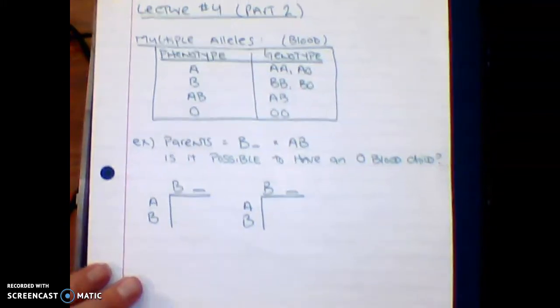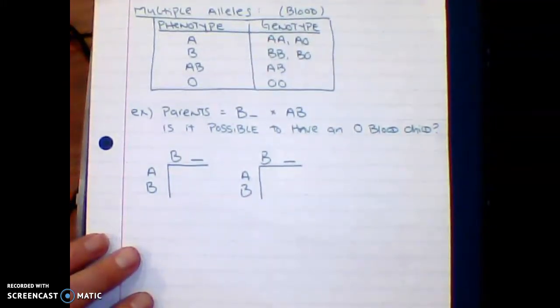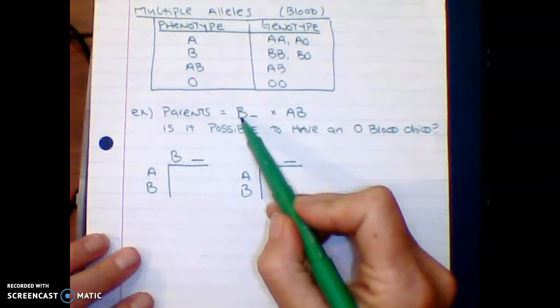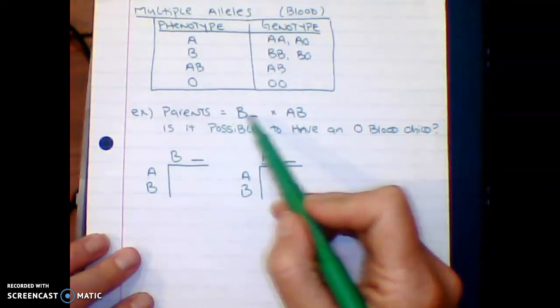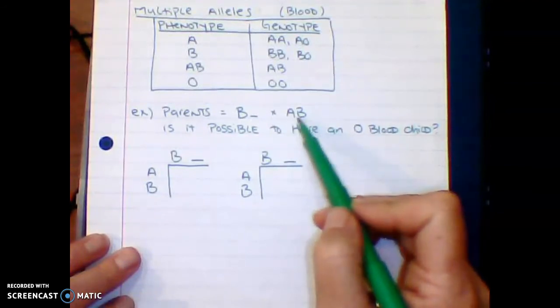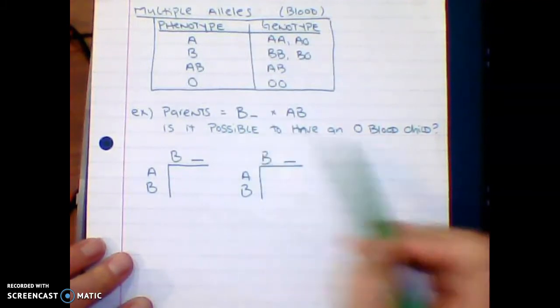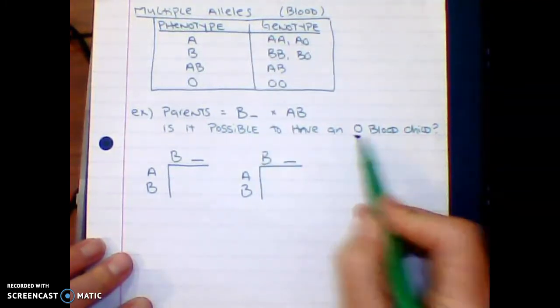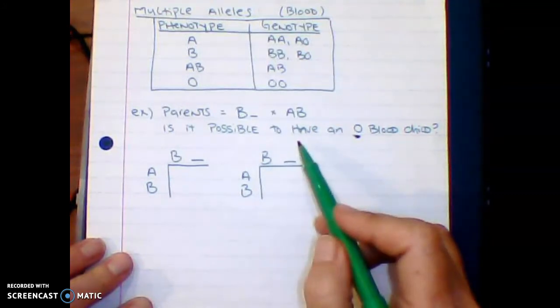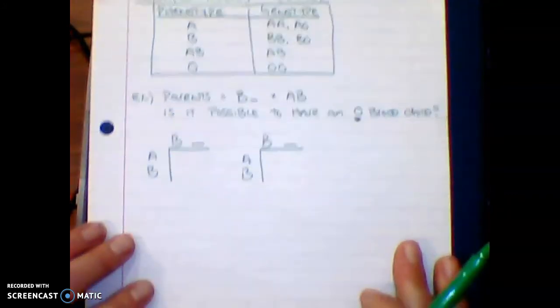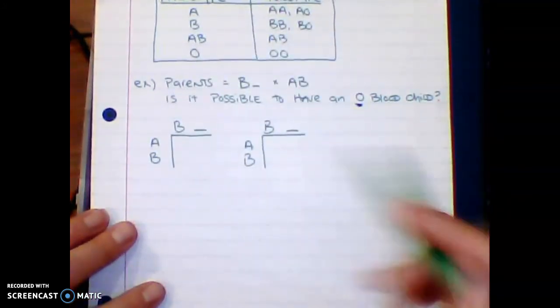So let's go ahead and look at a little practice problem here. If you have a parent that's B blood, you don't know if he's BB or BO, you just know he's B blood, and you have a parent that's AB. I want to know if it's genetically possible to actually have an O blood baby from this combination.